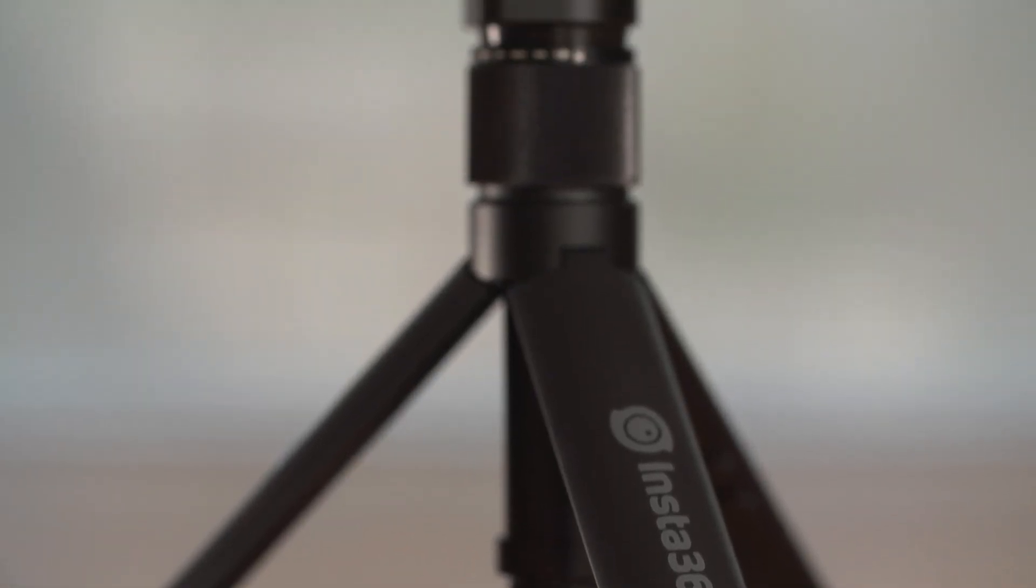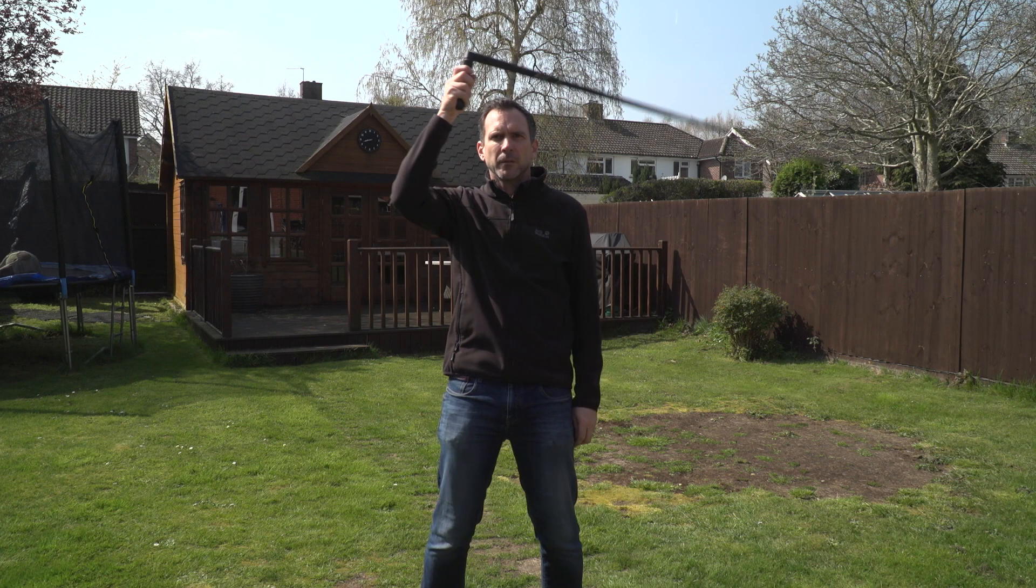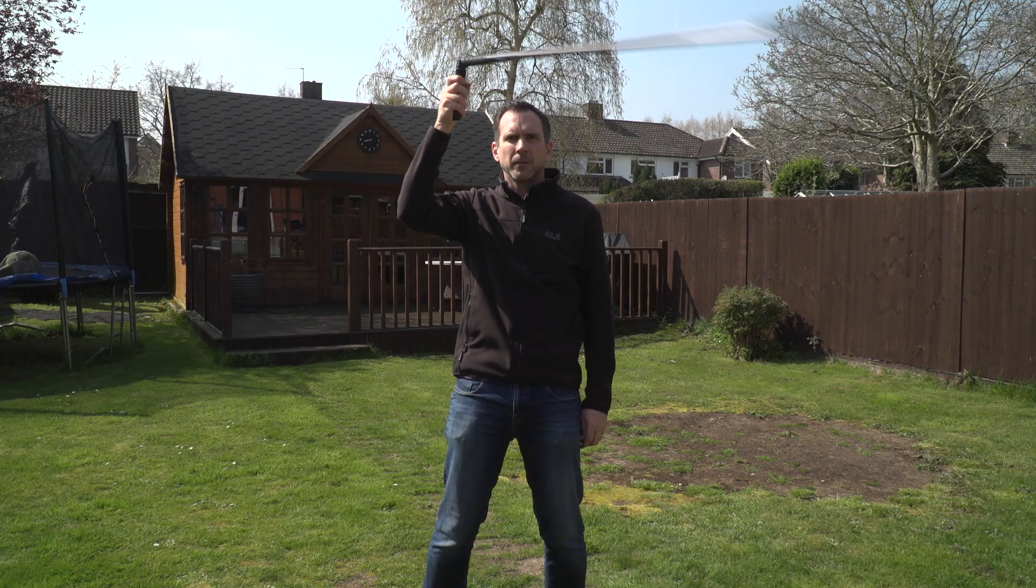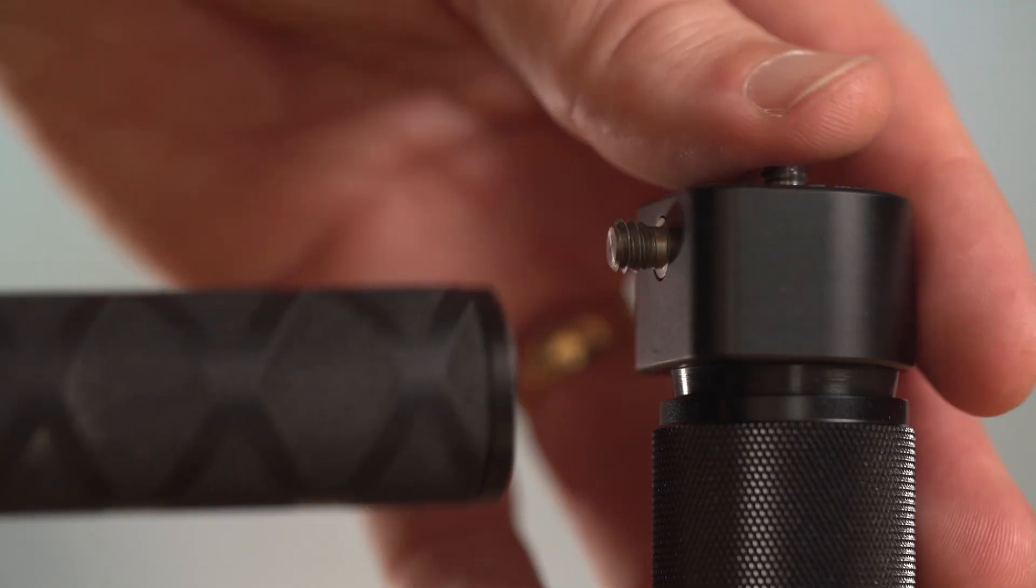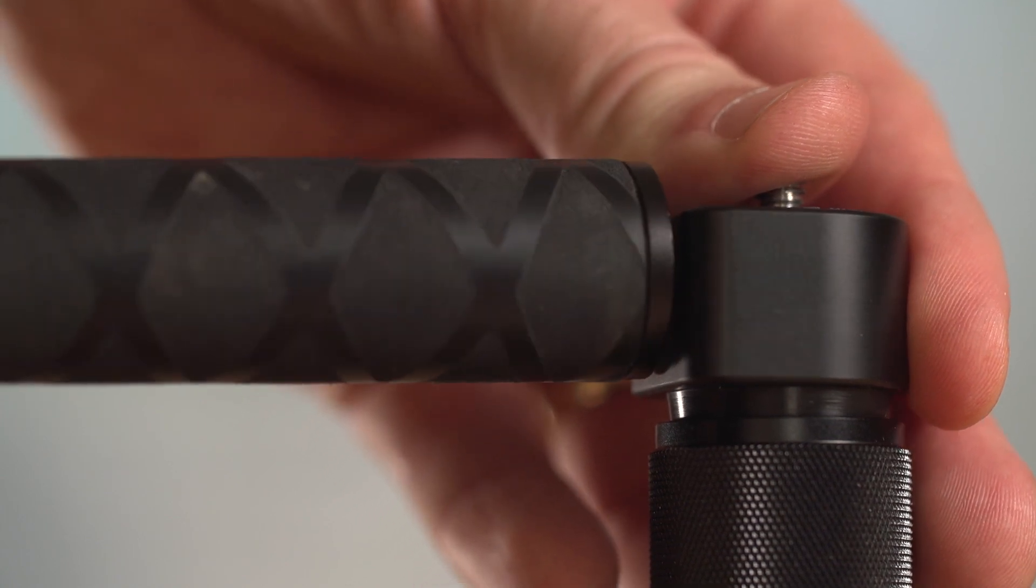The fourth tripod I have is the Insta 360 tripod, and this is the bullet time handle. I bought this specifically to use for the bullet time effect. It's got two quarter-inch threads: one for when you use it as a tripod and one for the selfie stick so it comes out at a 90-degree angle.